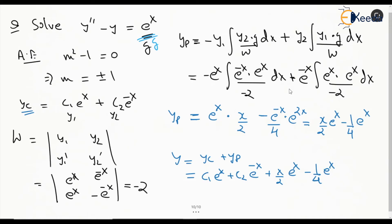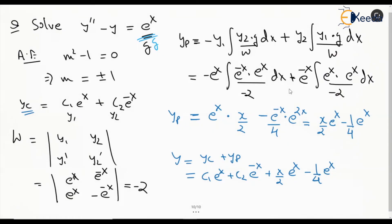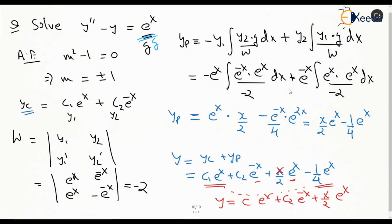Now you can see that maybe this form won't be provided in the options. The reason is: this c1 e to the power of x and minus 1 over 4 e to the power of x can be brought together, because c1 is a constant and minus 1 over 4 is also a constant. The x over 2 term is separate because it has x with it, making it a higher order. So we can write it as c times e to the power of x plus c2 e to the power of minus x, plus x over 2 e to the power of x. This is likely the form given in the options.